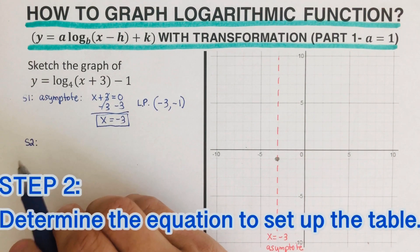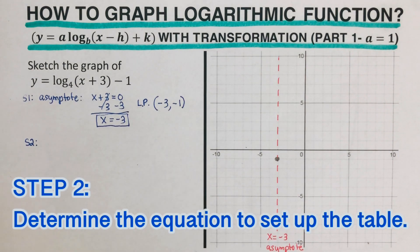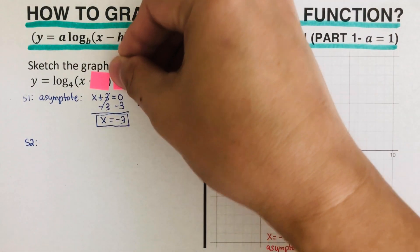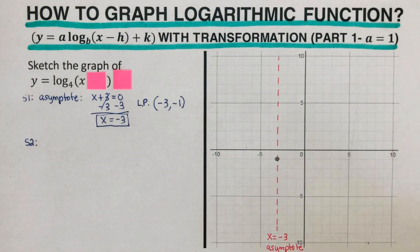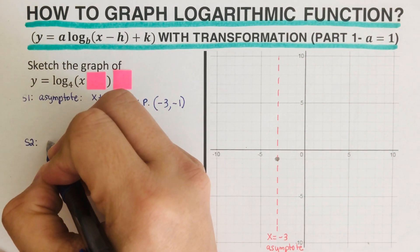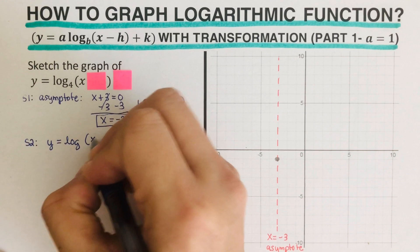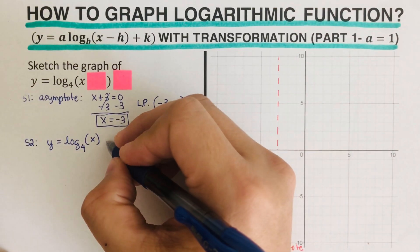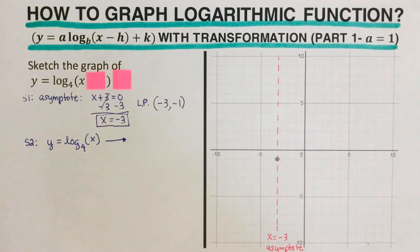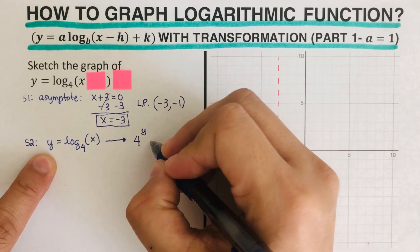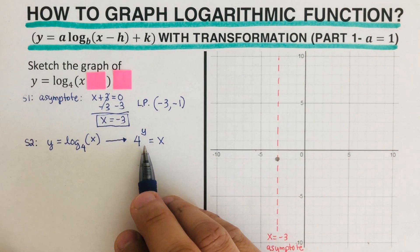The second step is to determine the equation to set up the table. We cover the h and the k, and what's left is the equation we'll use. Covering h and k leaves us with y equals log base 4 of x. We then convert this to exponential form: 4 to the power y equals x. This is the equation we'll use to set up the table.